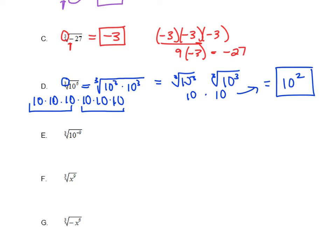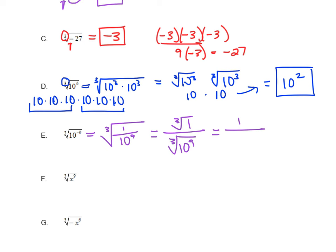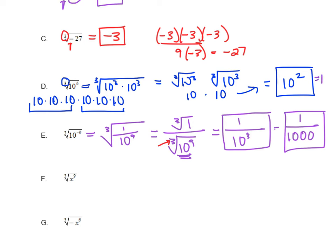Letter E: the cube root of 10 to the negative 9. We don't deal with negative exponents, so we turn that into a fraction: 1 over 10 to the positive 9th power. Any time you're taking a cube root of a fraction, you can break it up — the cube root of 1 over the cube root of 10 to the 9th. The cube root of 1 is just 1. For 10 to the 9th: you have 9 tens, and 3 groups of 3 fit into that, so that's 10 to the 3rd power. Our answer is 1 over 10 to the 3rd, or 1 over 1,000.